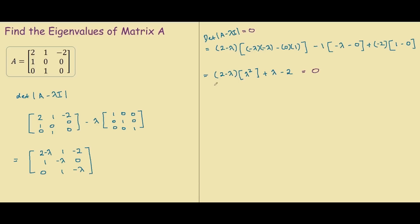And when we simplify this down, we have 2 minus lambda times lambda squared. And over here, I'm going to manipulate these terms into negative negative lambda plus 2 equal to 0.